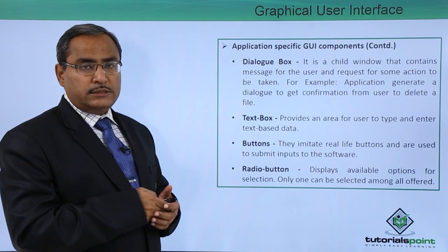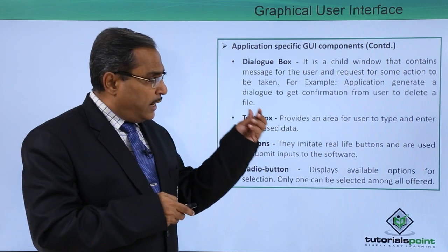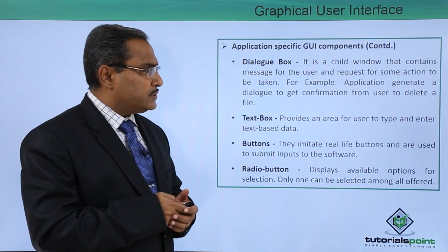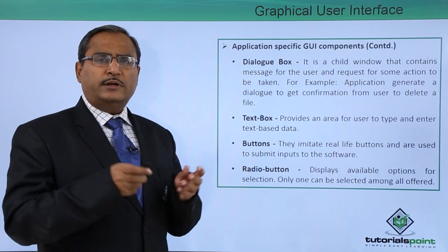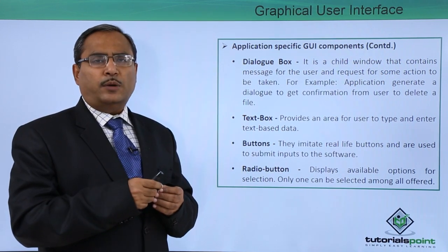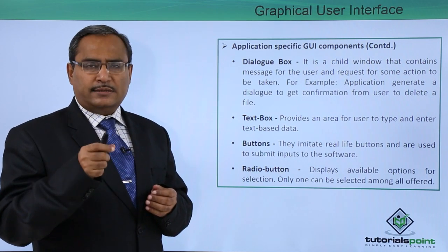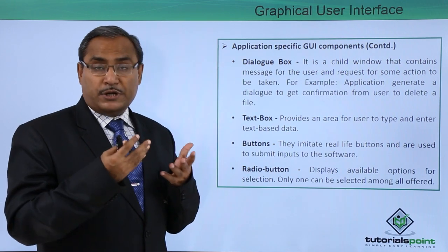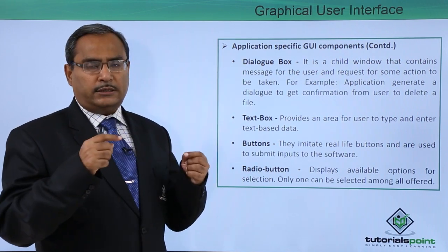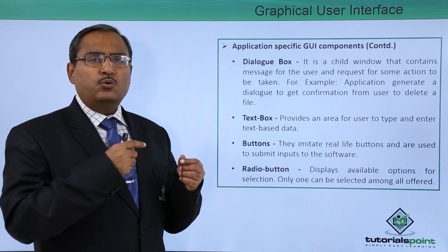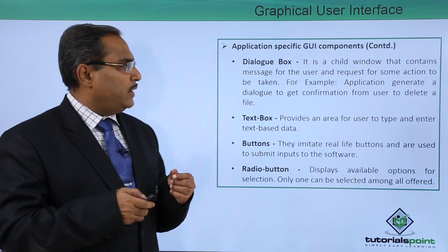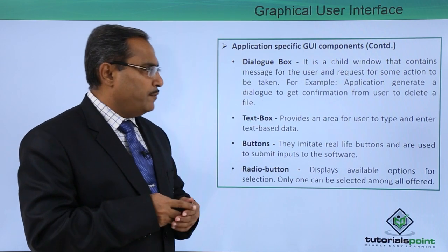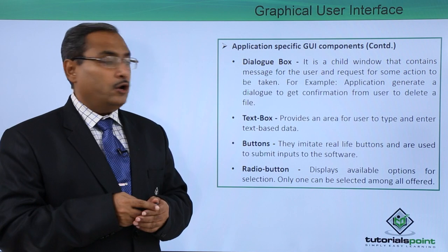Next, we are going to discuss the dialogue box. It is a child window that contains a message for the user and requests some action to be taken. For example, a dialogue box may contain options such as Abort, Retry, Cancel, or OK. As a user we interact with one of the given options. An application may generate a dialogue to get confirmation from the user — for instance, whether it should delete a file or not.